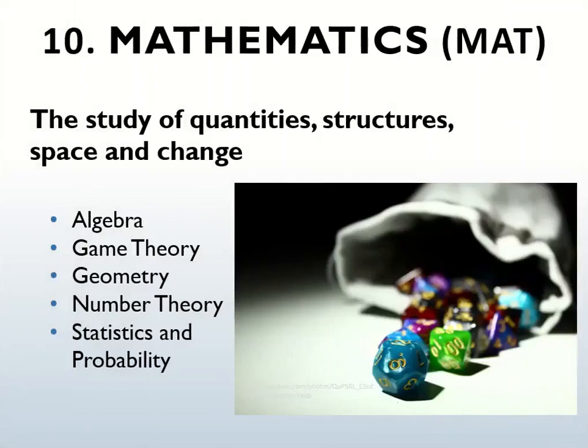The mathematics category involves the study of quantities, structures, space and change. Statistics is the branch of mathematics that deals with the collection, analysis, interpretation and presentation of numerical data. Probability is the mathematical representation of the likelihood of an event occurring. The subcategories for mathematics are algebra, game theory, geometry, number theory, statistics and probability.